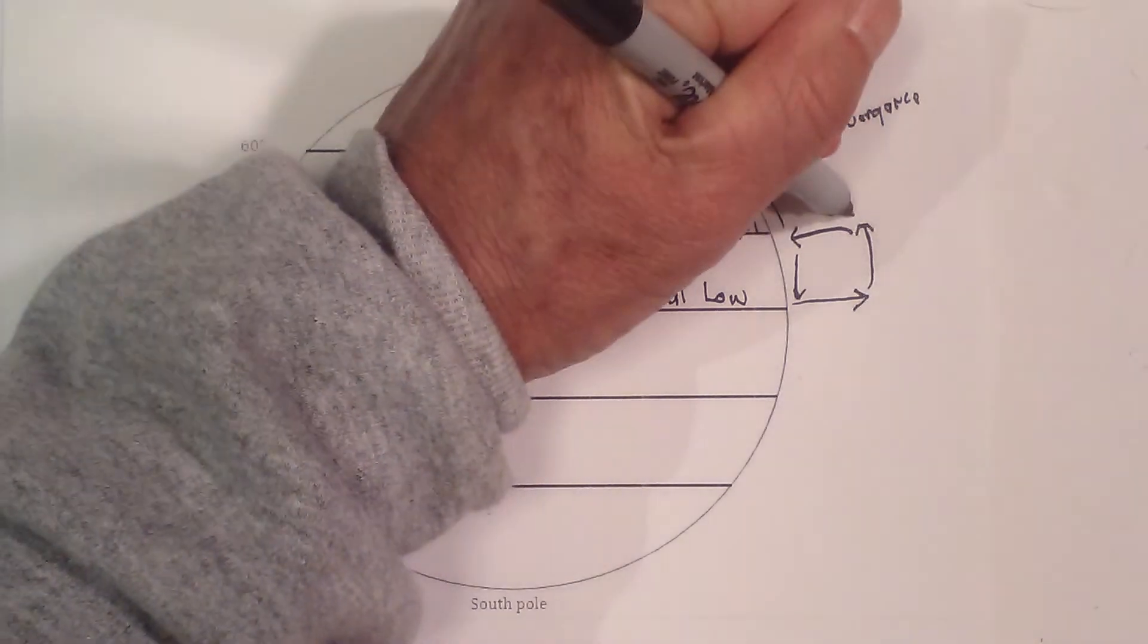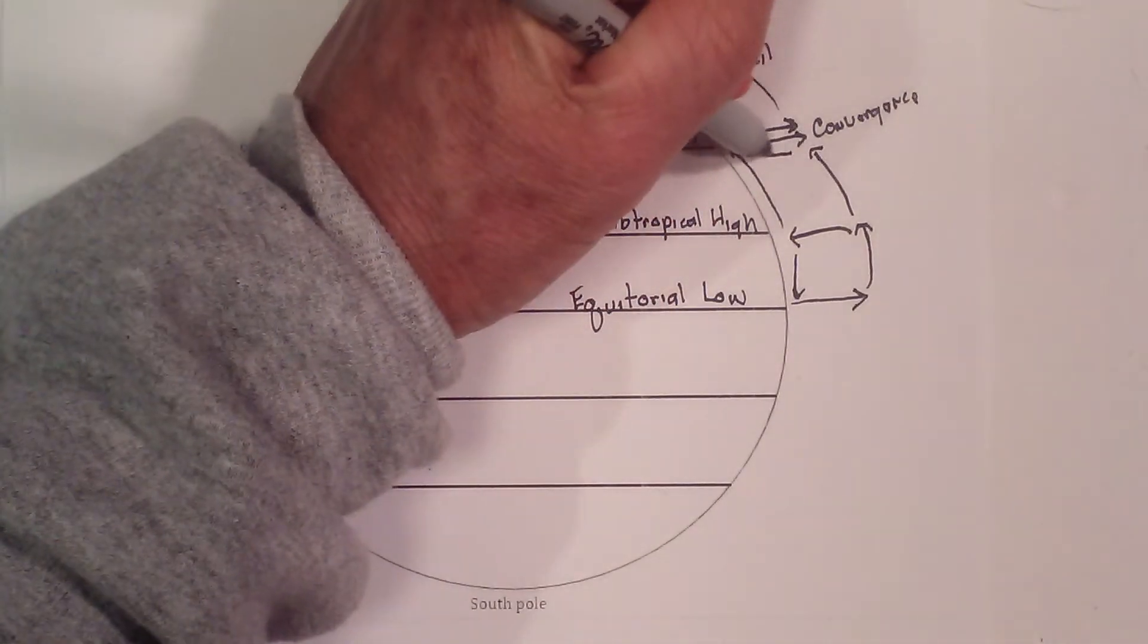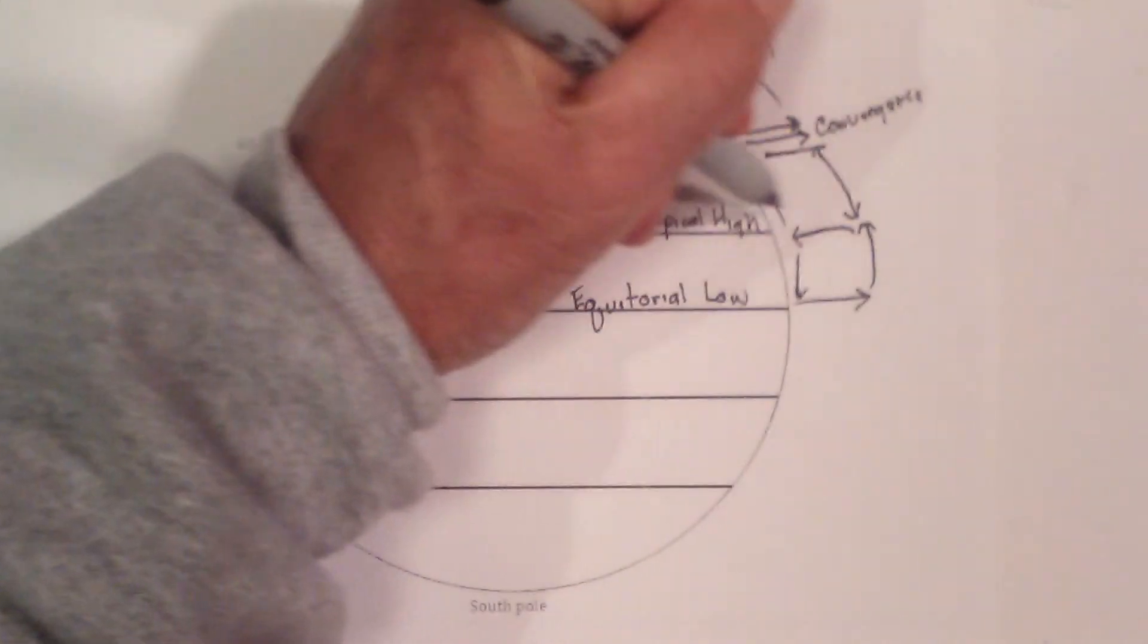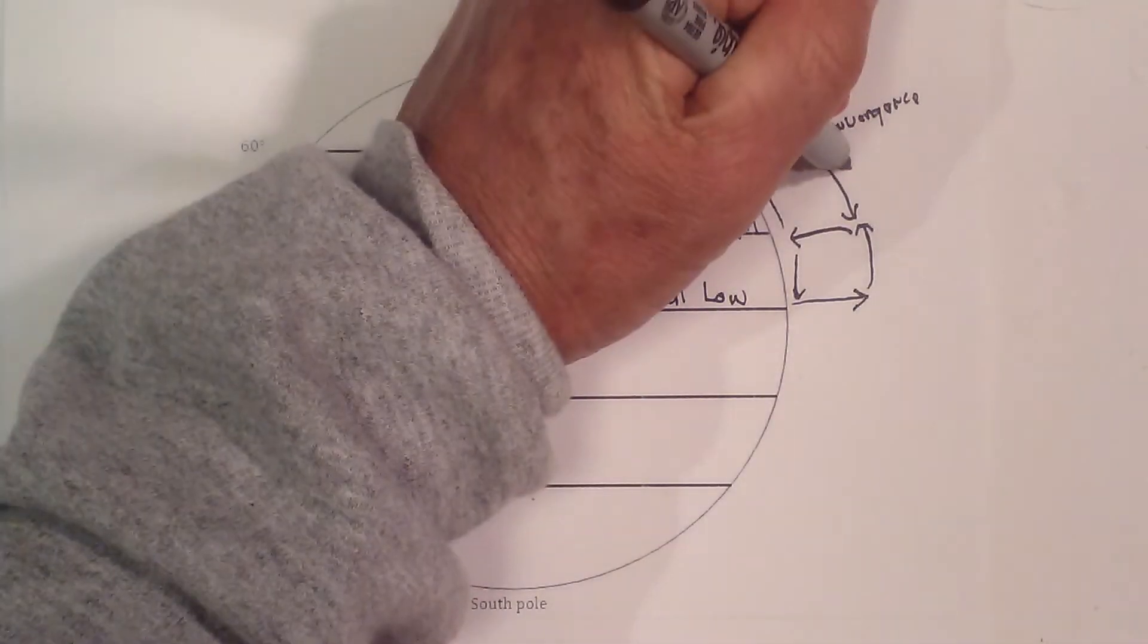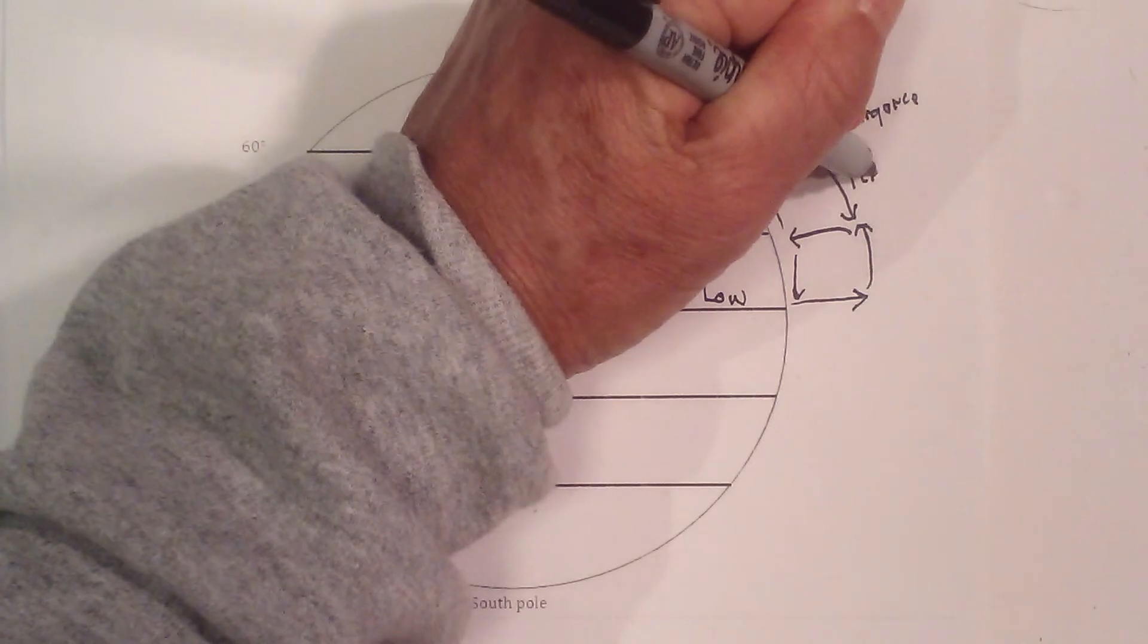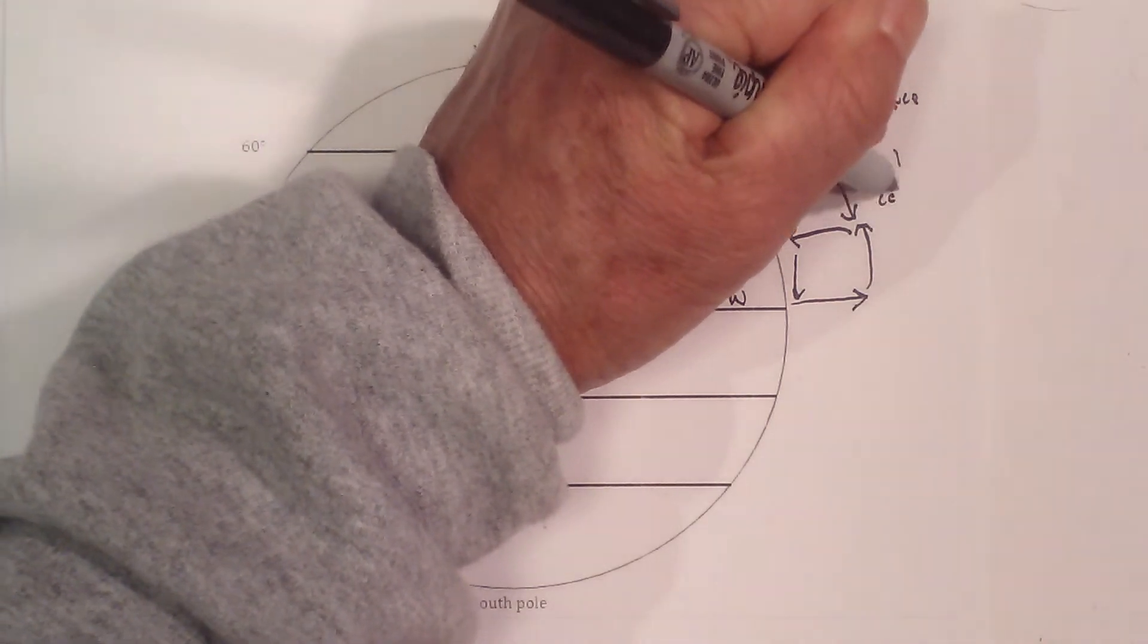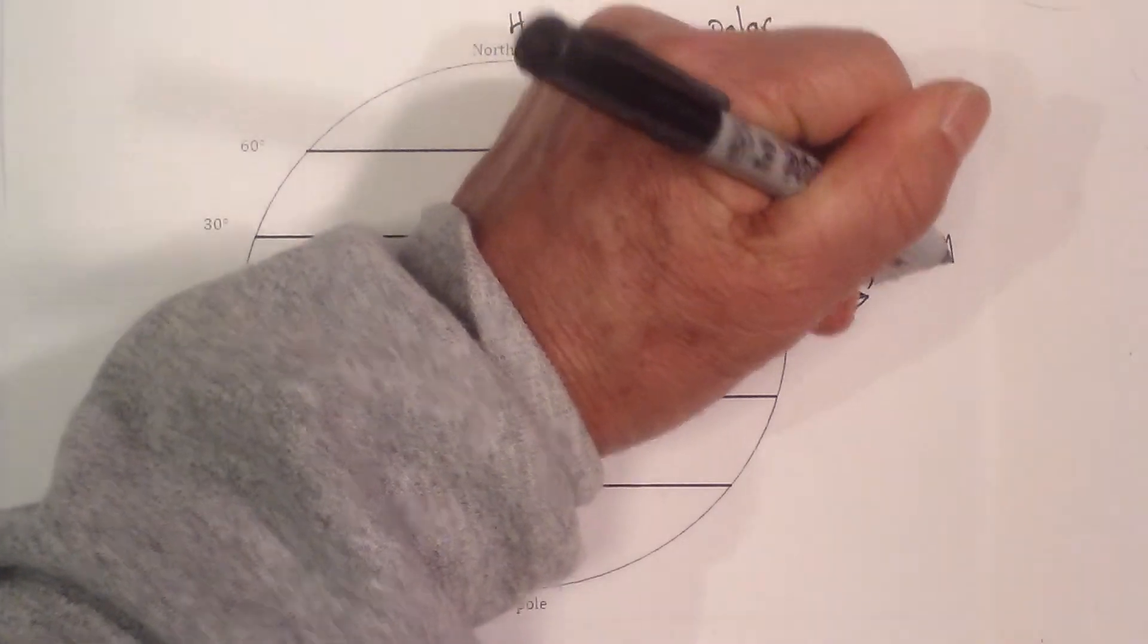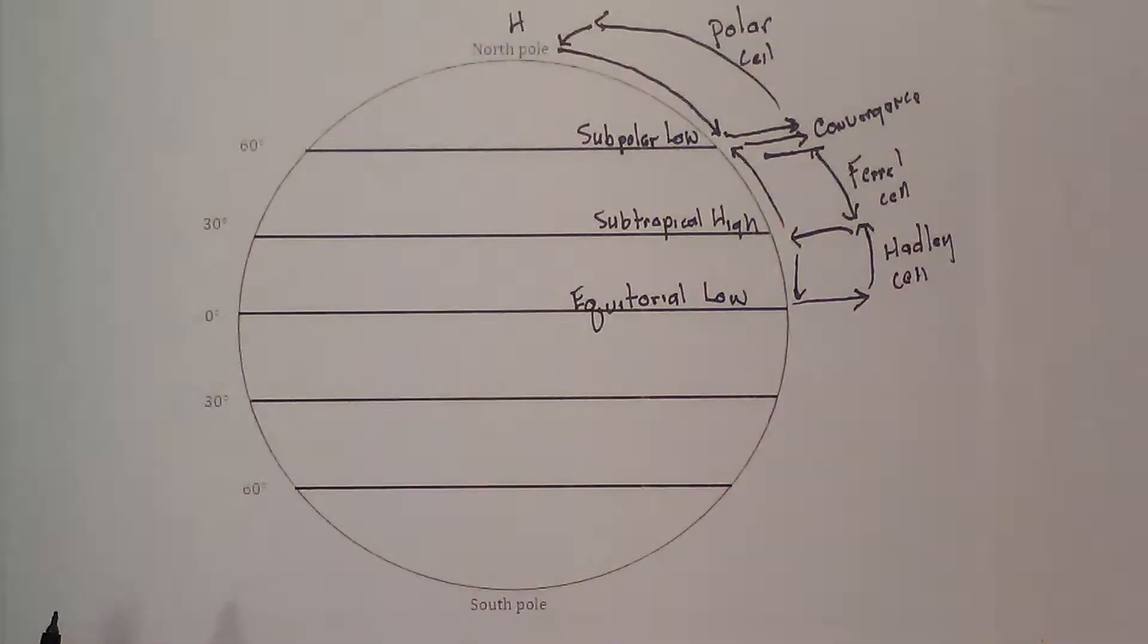Let me complete this. It makes a loop. And this is the Ferrel cell, and this is the Hadley cell.